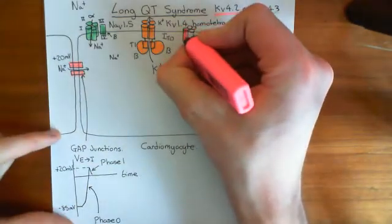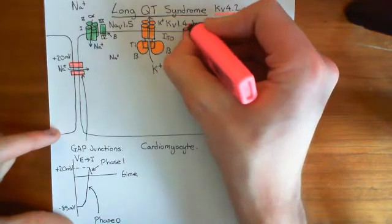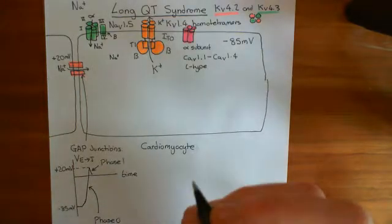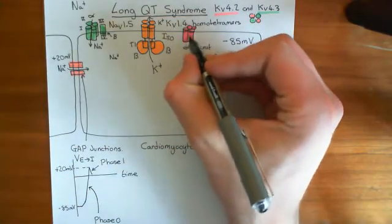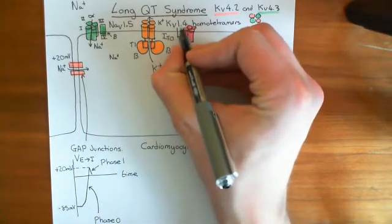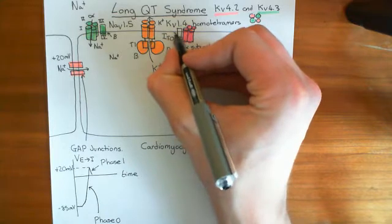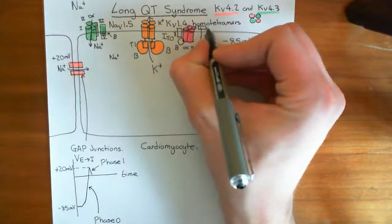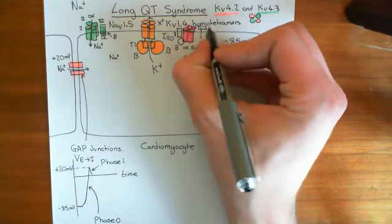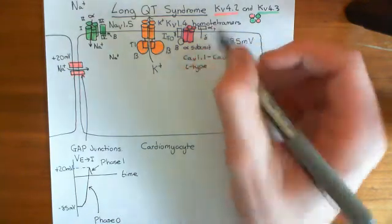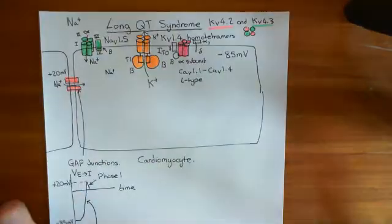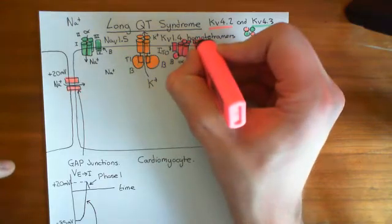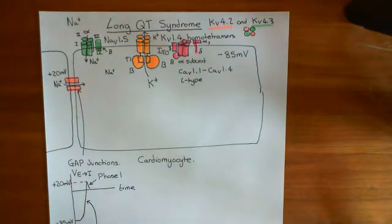Voltage-gated calcium channels don't just consist of the alpha subunit — they have a whole bunch of auxiliary subunits. There is a gamma subunit, a beta subunit, and what's known as the alpha-2 delta subunit, where the extracellular portion is alpha-2 and the transmembrane stick holding it in the membrane is the delta subunit. The important take-home message is that we have an L-type voltage-gated calcium channel here, and we'll continue this discussion in the next video.